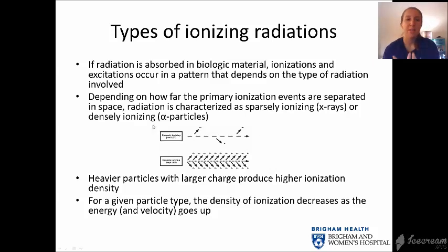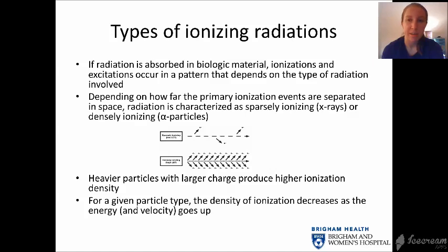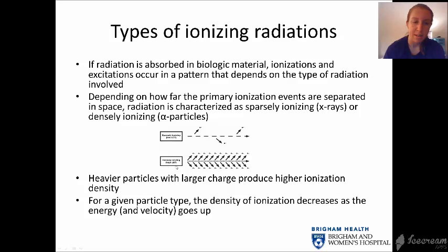When radiation is absorbed in biological material, ionizations and excitations occur in a pattern that depends on the type of radiation. Depending on how far apart the primary ionization events are in space, radiation is characterized as sparsely ionizing — like x-rays — or densely ionizing, like alpha particles. Sparsely ionizing is low LET, meaning a low amount of energy is deposited per unit length, while densely ionizing is high LET, meaning a high amount of energy is deposited per unit length.